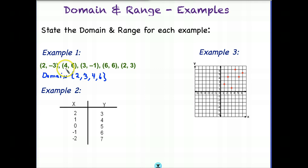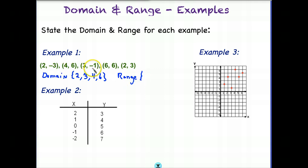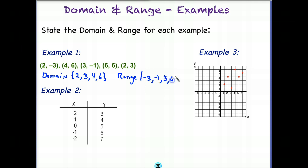If we do the range, we do it the same way. I have a negative 3, a 6, a negative 1, another 6, and a 3. Going in numerical order: negative 3 would come first, followed by negative 1 — smallest to greatest is numerical order. Then we have a 3, and finally a 6. And that would be considered our range.